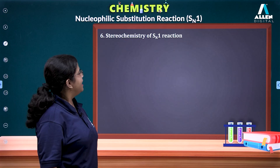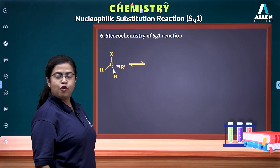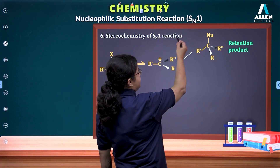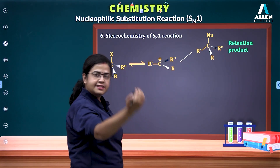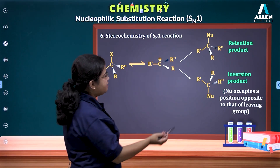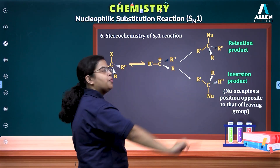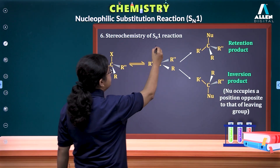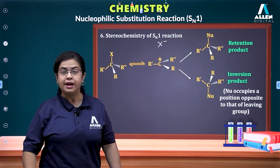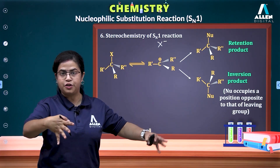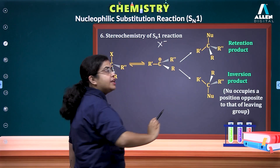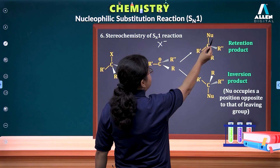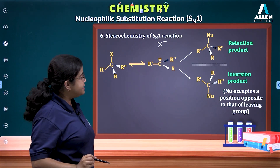Regarding stereochemistry: since the carbocation formed is sp2 hybridized and planar, the nucleophile can attack from the front side, leading to a retention product, or from the back side, leading to an inversion product. You get a mixture of both, but there is a slightly greater probability for the back-side attack product, because X⁻ after its departure lingers somewhere near the front, causing electronic and steric repulsion for an incoming nucleophile from that side.